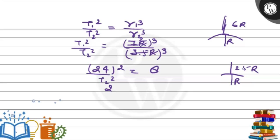That is the geostationary satellite squared upon T2 squared. Here it is 2, that means 8. So on taking the roots, 24 upon T2 will be equal to under root 8, that is 2 times the cube root of 8.